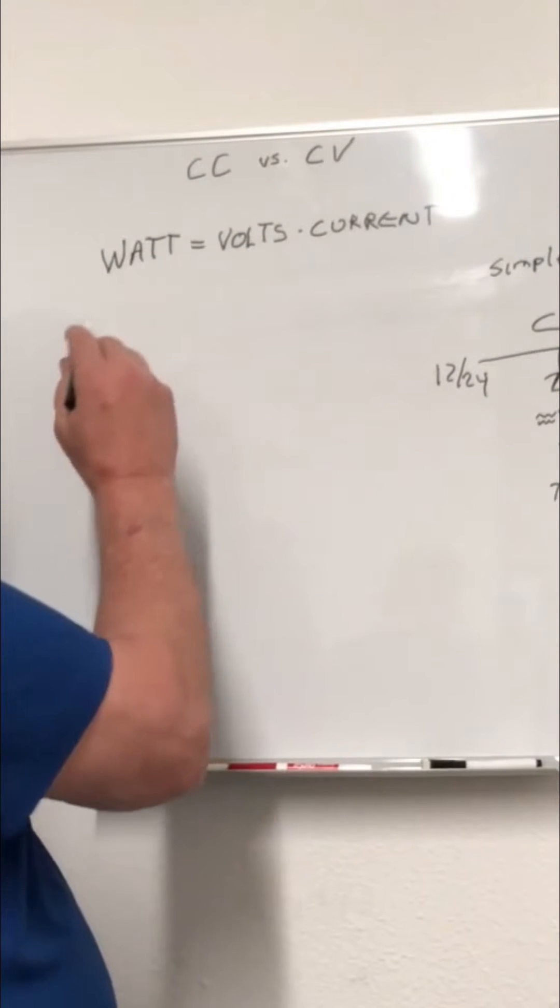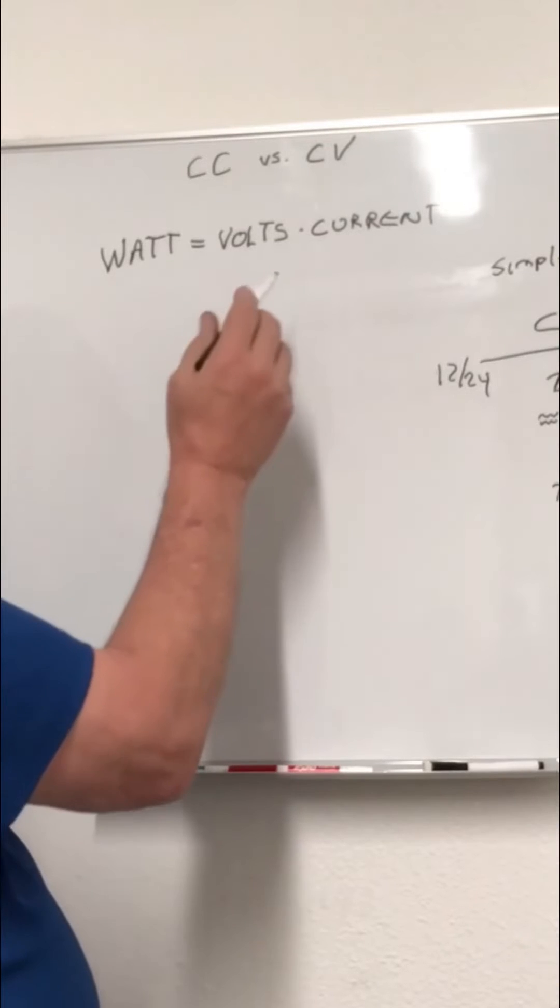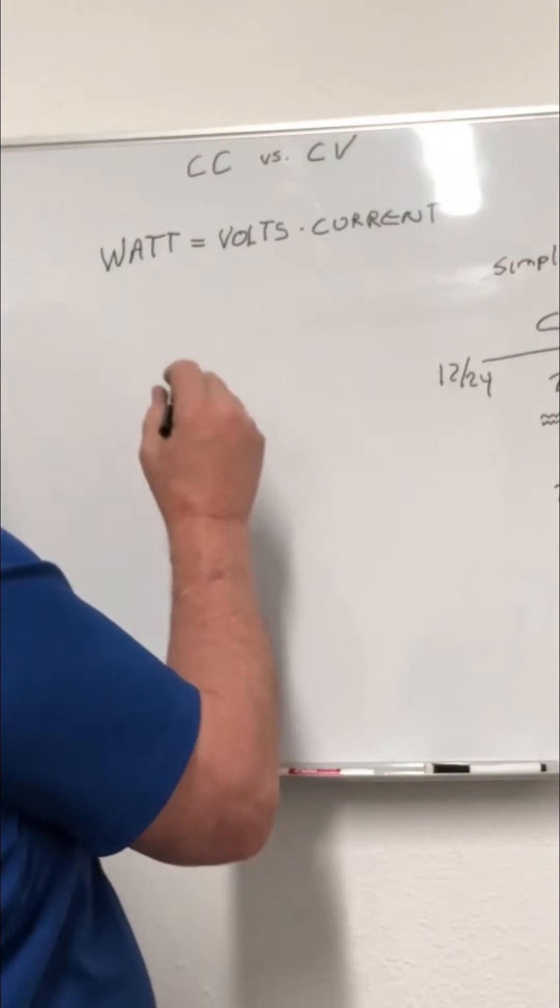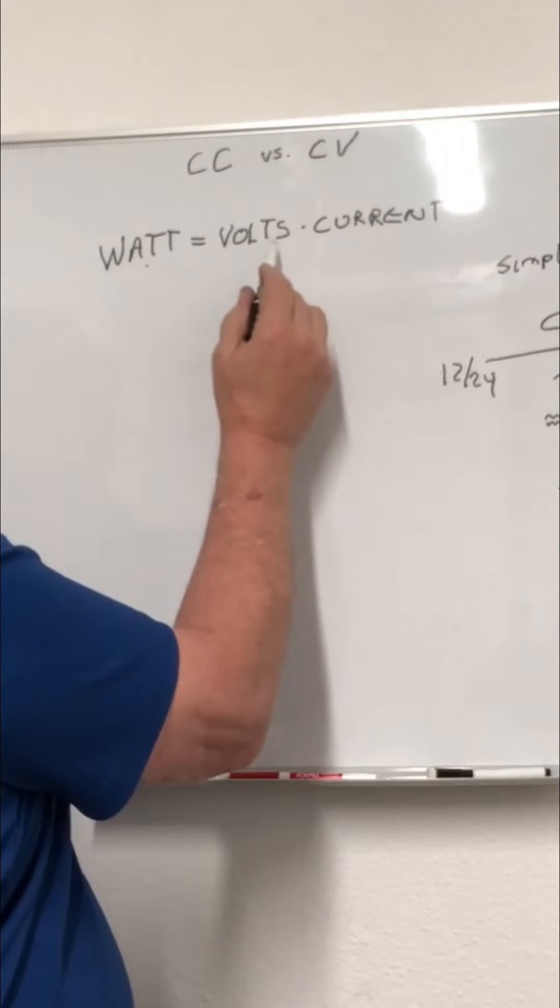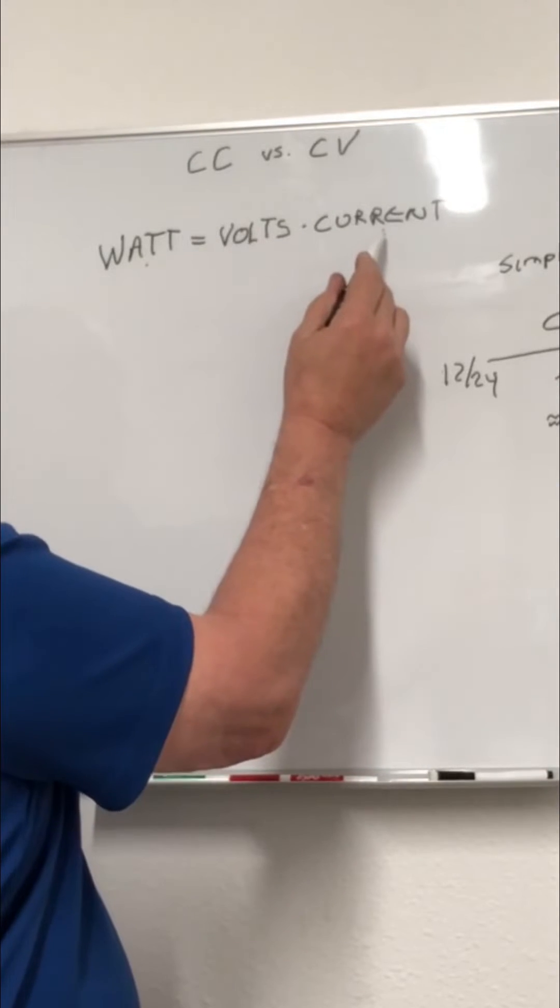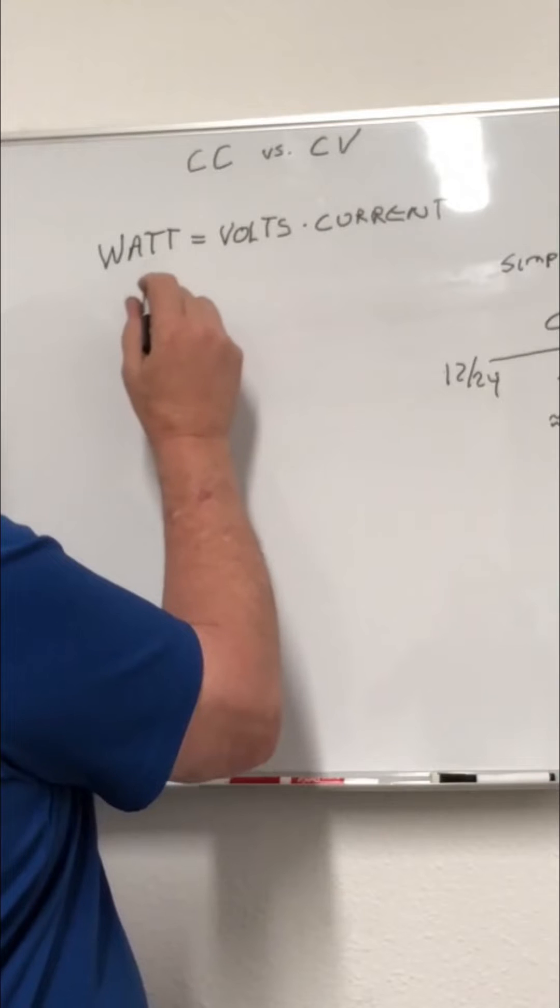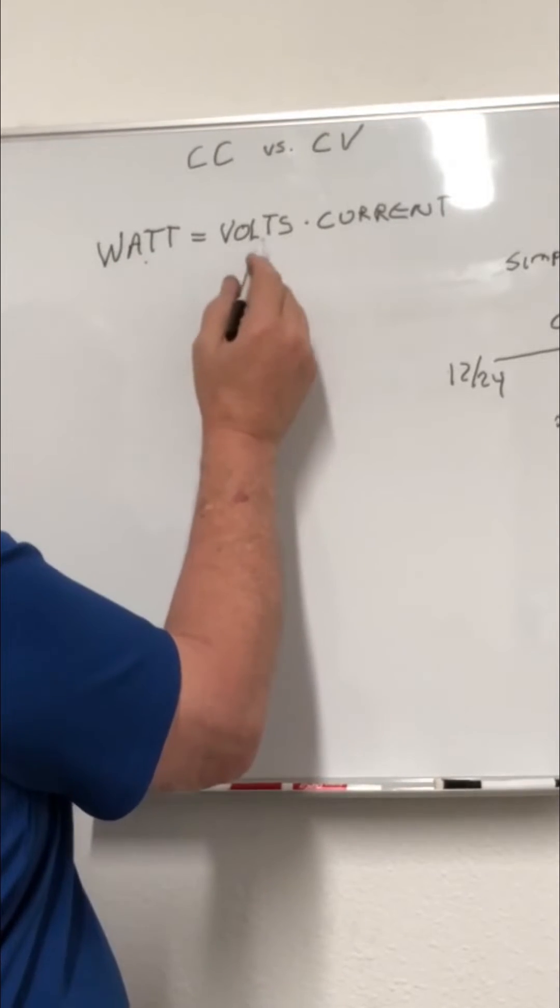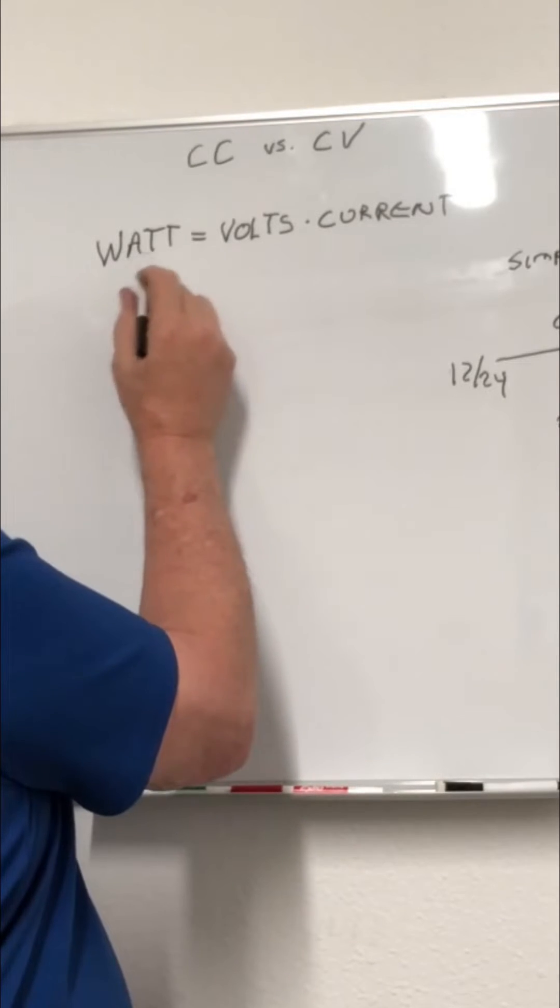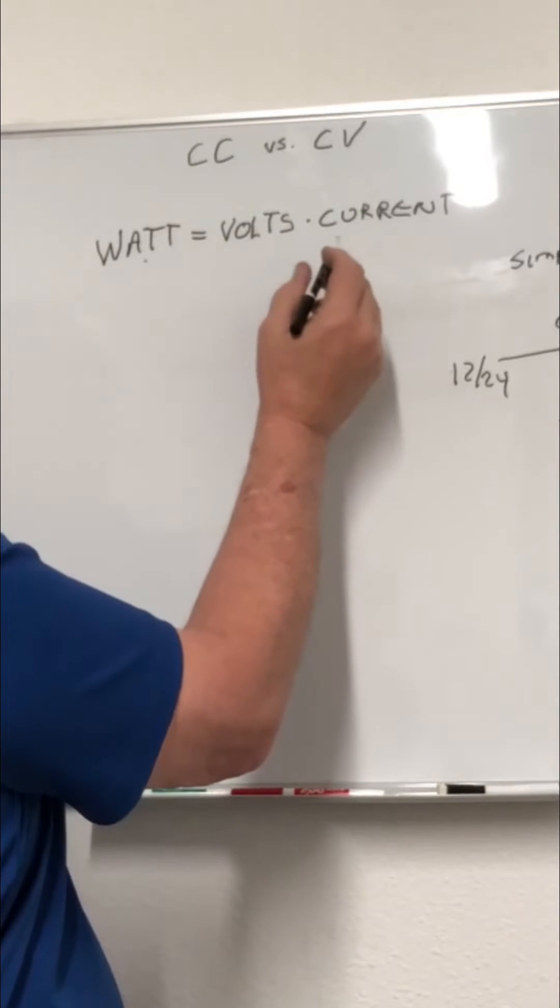One of the main formulas you'll need to be familiar with when dealing with drivers and LEDs is watts equals voltage times current. If you have any two of these parameters, you can figure out what the missing parameter is.